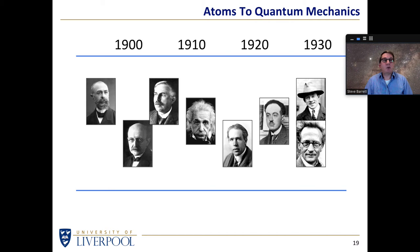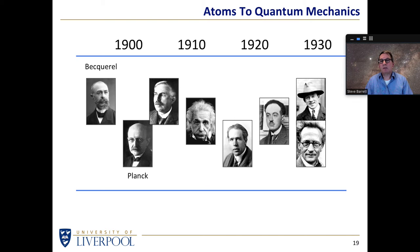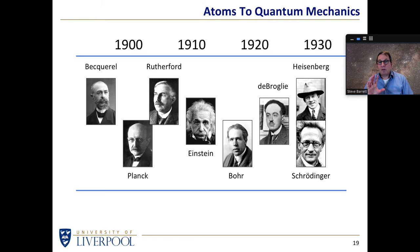As soon as we enter the 20th century, things start getting very complicated. Notice this is just the first three decades — approximately a hundred years ago — and again these are the key players, placed approximately where they made their largest contributions. Perhaps you recognize some: Becquerel, then Planck, Rutherford, Einstein, Bohr, Heisenberg, and Schrödinger. There are a number of key experiments, observations, and discoveries in these relatively few decades.